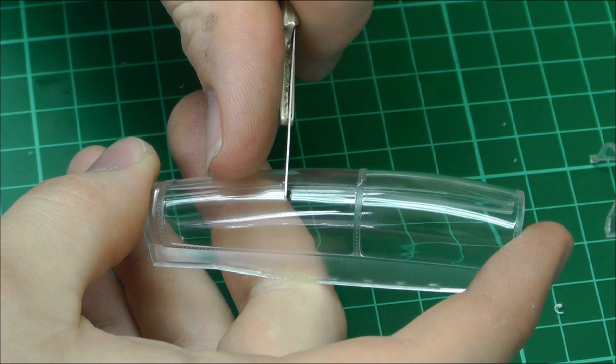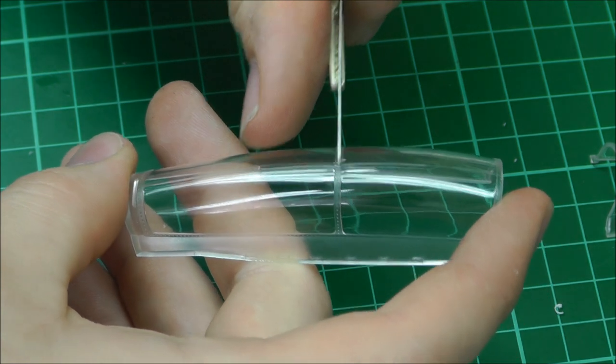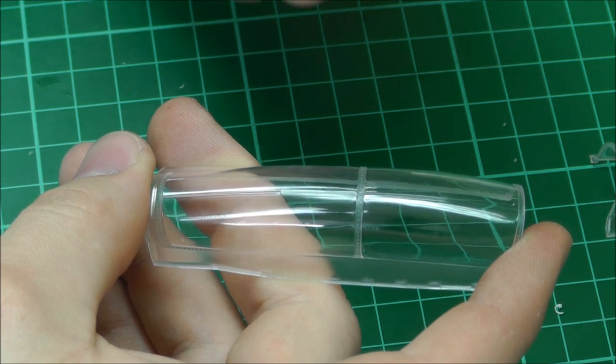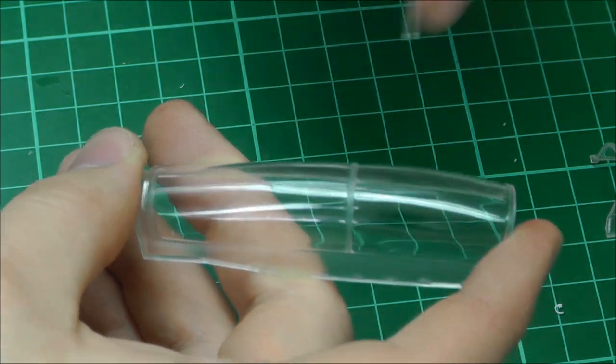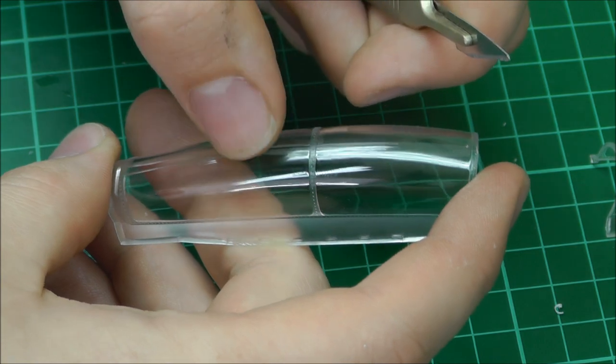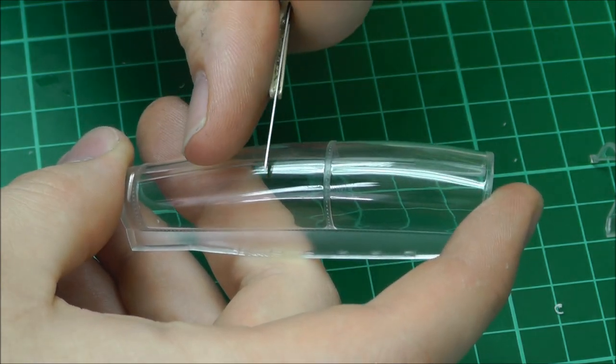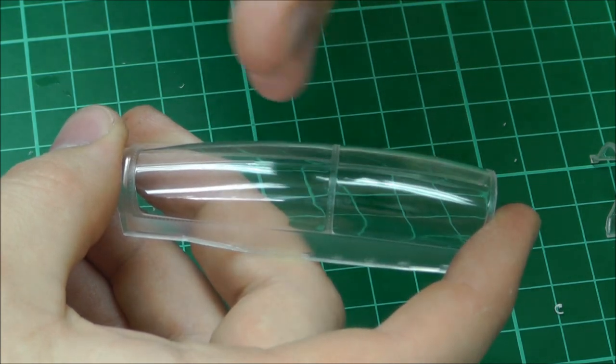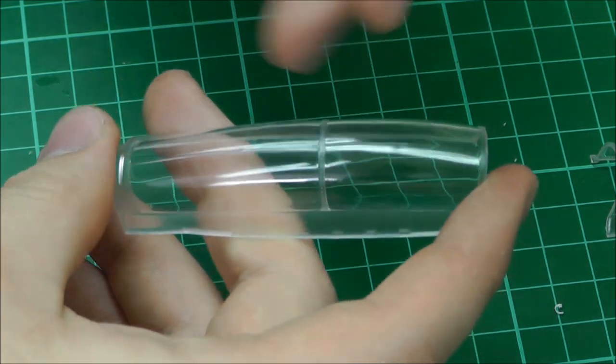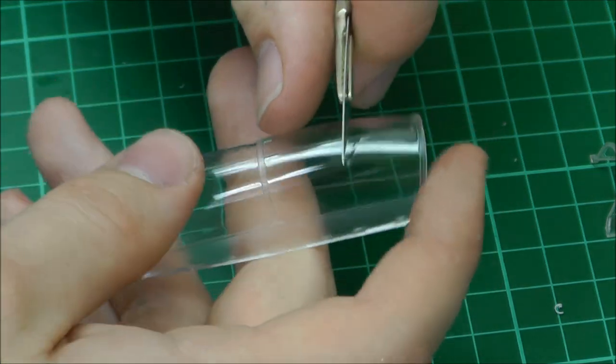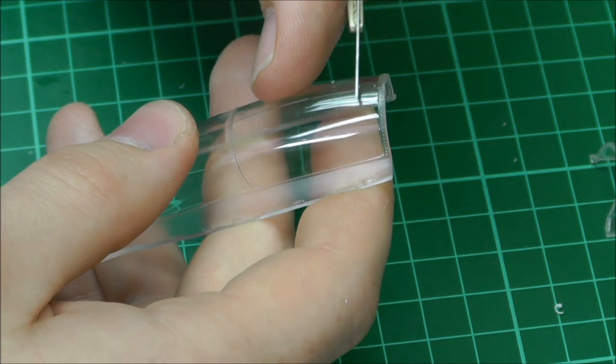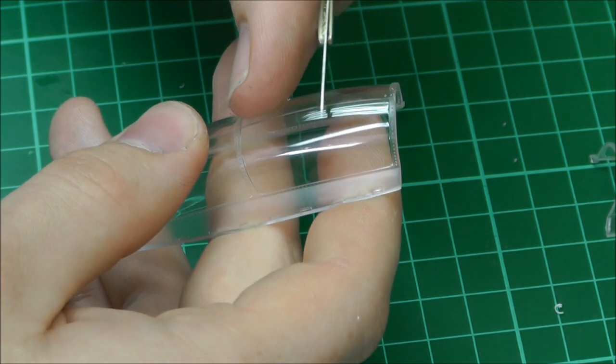We just want to take the seam line - the seam line is a slightly raised kind of hairline bit of plastic. That is almost virtually gone now, but we don't want to be scraping into the actual canopy itself, just that hairline bit of raised flash that we've got going on here.